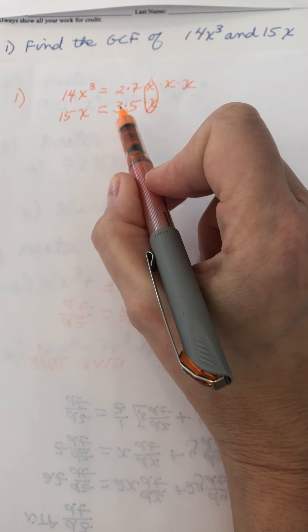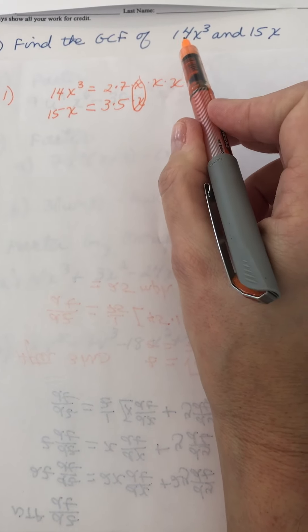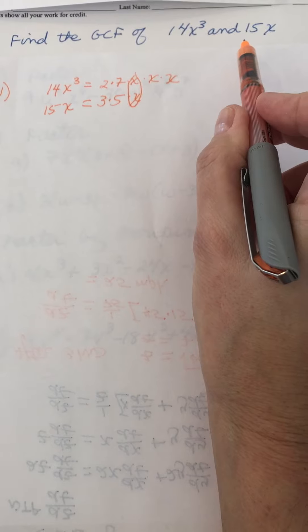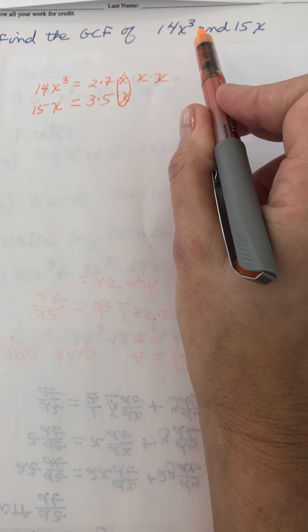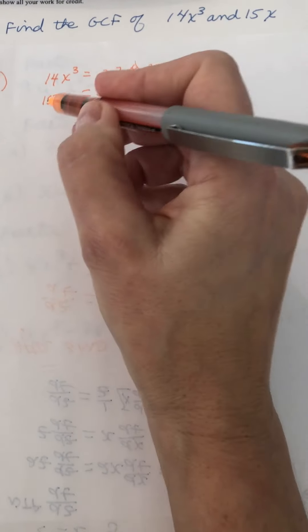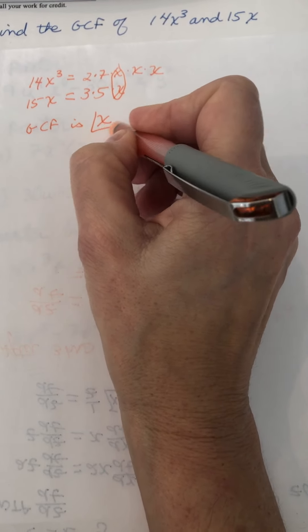This is literally how you could write everything out, but at some point you want to be able to just do that mentally. Compare the two numbers - there are no factors in common. Then look for the greatest number of factors of x in common, and there's only one in common, so the GCF is just x for that one.